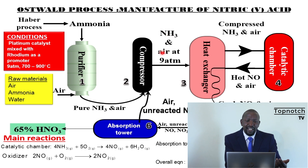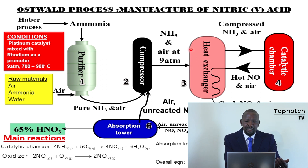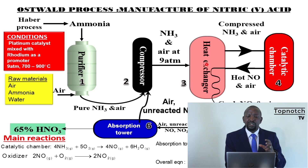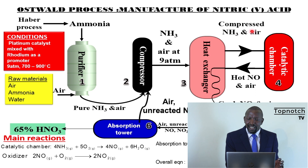Once you have ammonia and air that has already been compressed, they are taken to the heat exchanger. The role of the heat exchanger is to heat the incoming gases — that is, ammonia and air — to the required temperature. We said we require a temperature of around 800 degrees Celsius. So we preheat the incoming gases. The compressed, already hot ammonia and air are then taken to the catalytic chamber.